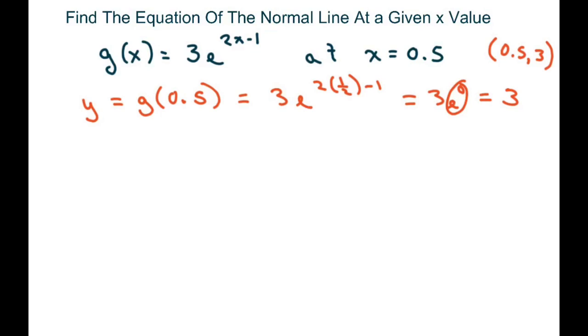Now we're going to find the derivative and find the slope of the tangent line. The slope of the normal line is the opposite reciprocal of the tangent slope. So let's just find the derivative. That's going to equal 6. We multiply these two numbers, so it's 6. The derivative of our exponent is 2, so that's 6e^(2x-1).